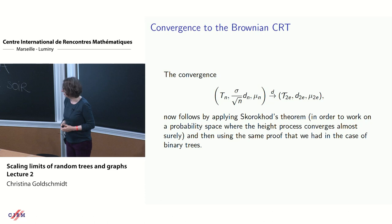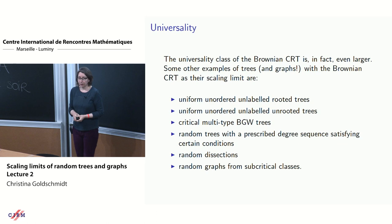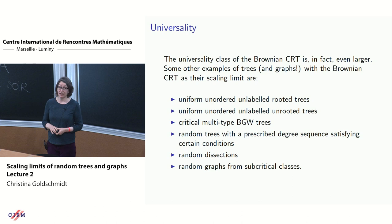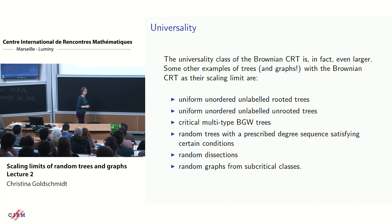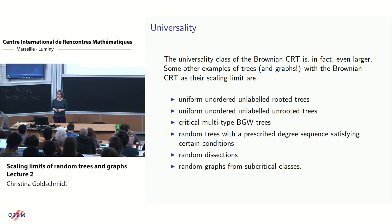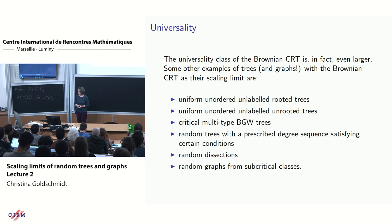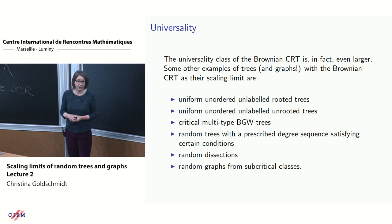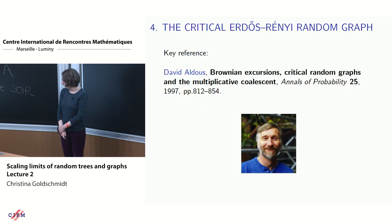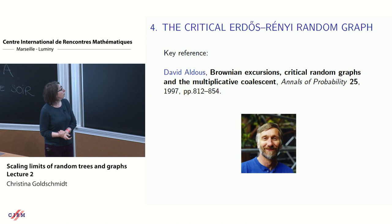The universality class of the Brownian CRT is quite a bit larger than just conditioned BGW trees. There are many other examples of trees — and indeed some things that aren't even trees to start with — that have the Brownian CRT as their scaling limit. This really does crop up all over the place: any time you have a roughly uniform random tree.